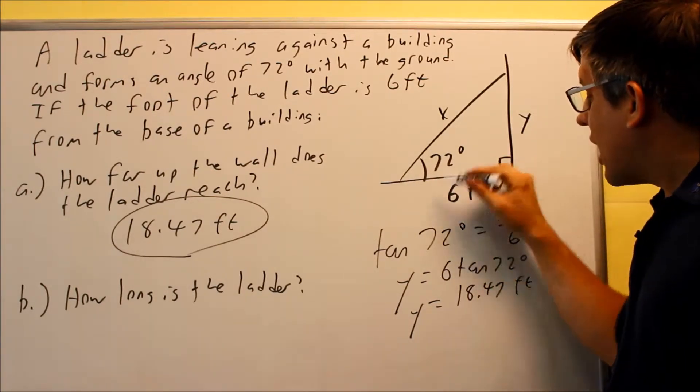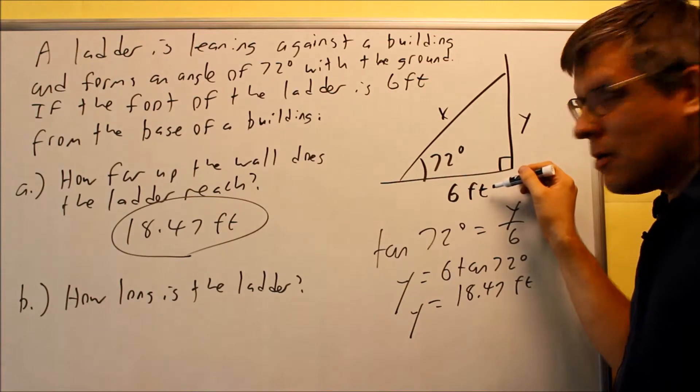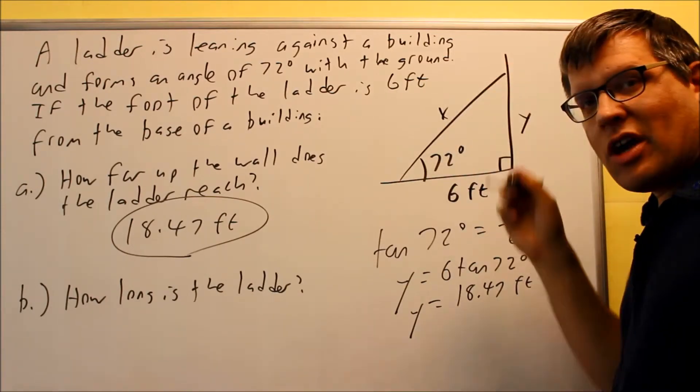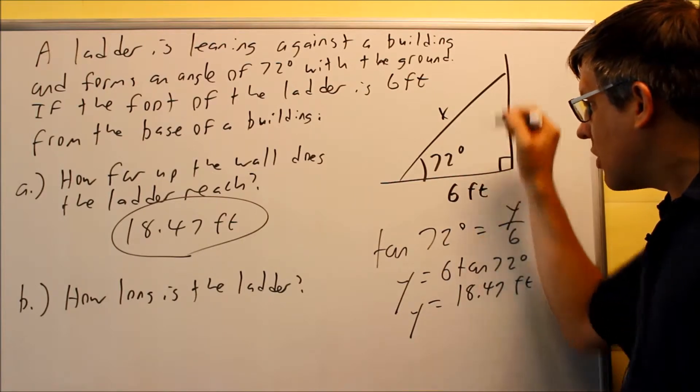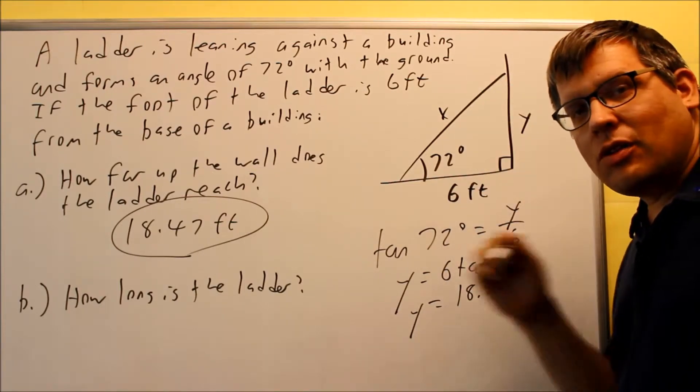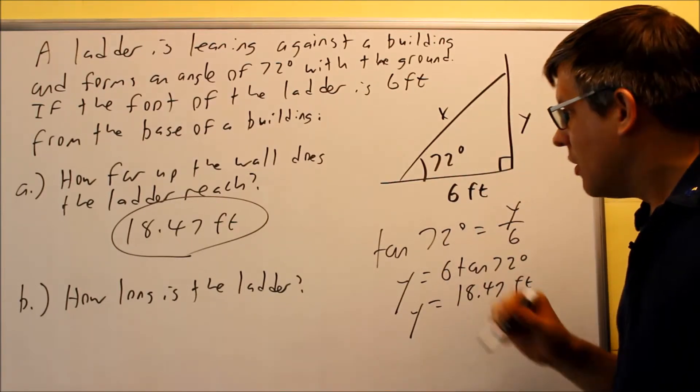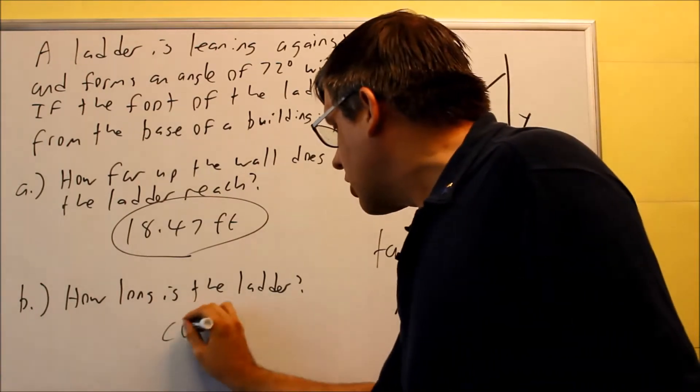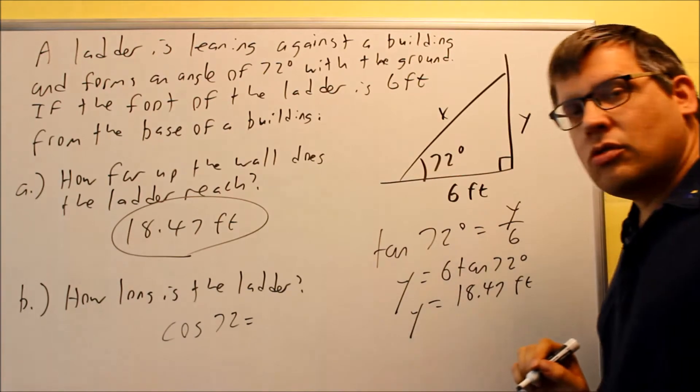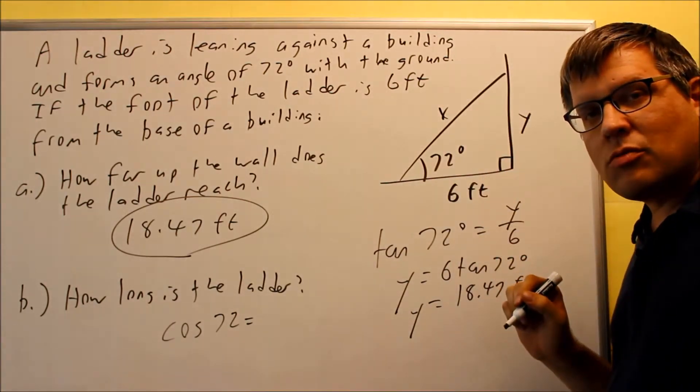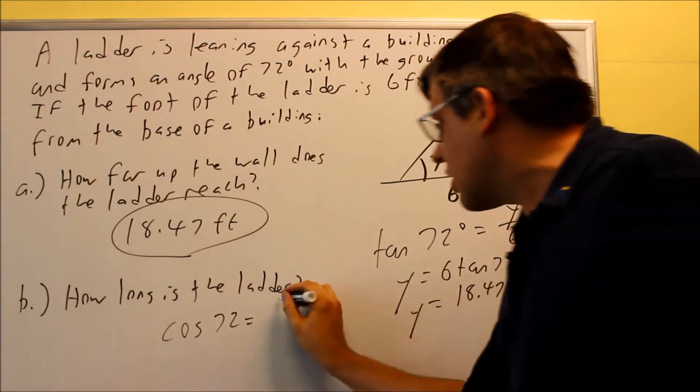I want to use a side that's given to me, six feet, and I'm trying to find X. So X is my hypotenuse, so I need to find a trig definition that relates the adjacent side and the hypotenuse. And this one is going to be our cosine. So we're going to do that down here, cosine of 72 degrees is equal to the definition for cosine, which is going to be adjacent over hypotenuse, six over X.